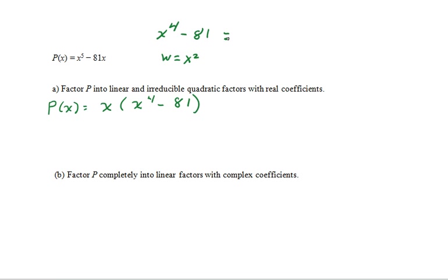x to the 4th minus 81 is w squared minus 81, which factors because it is the difference of 2 squares into w minus 9 and w plus 9.